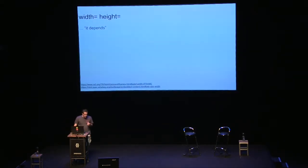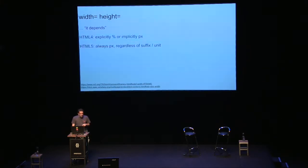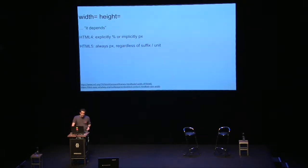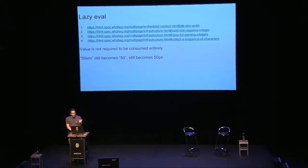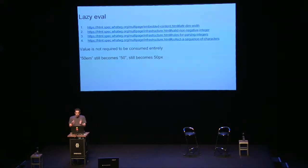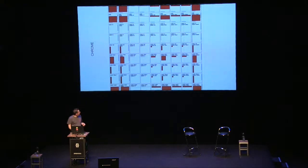Width and height might seem cut and dry, but in HTML4 values were expected to be either percentage-based or implicitly pixels. In HTML5 it's implicitly pixels regardless of the suffix. If you do add a suffix, it will still interpret it as pixels — it drops the suffix, similar to how parseInt works in JavaScript, taking numbers up until a non-numeric character. So width and height are going to be in pixels regardless of what you do. There's no discrepancy between Chrome and Firefox for width and height.